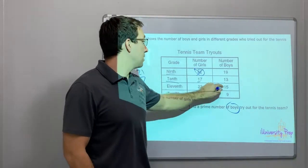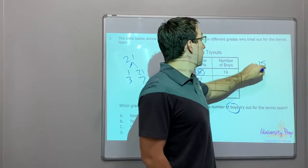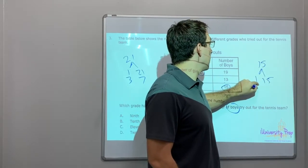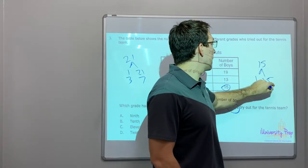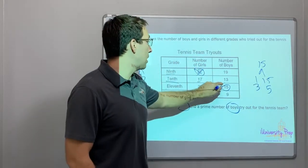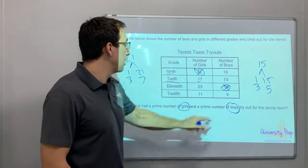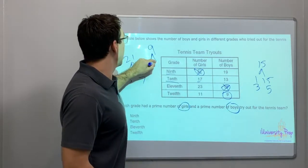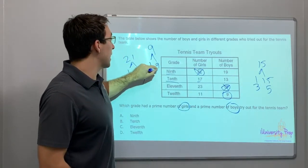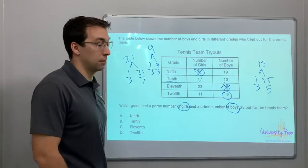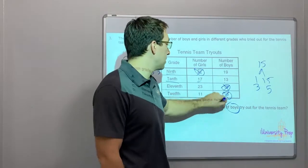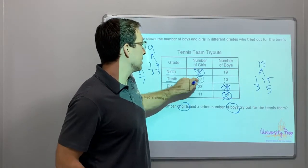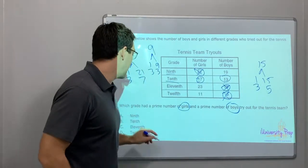11th grade has 15 — 1 times 15 and 3 times 5 — that is composite. And 9: 1 times 9 and 3 times 3 — also composite. So it's got to be 17 and 13 — the 10th grade.